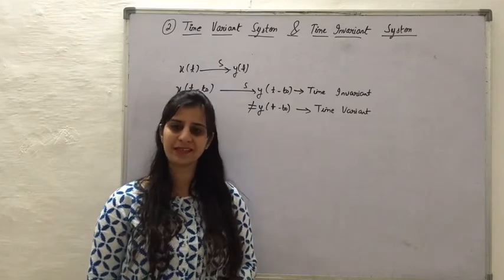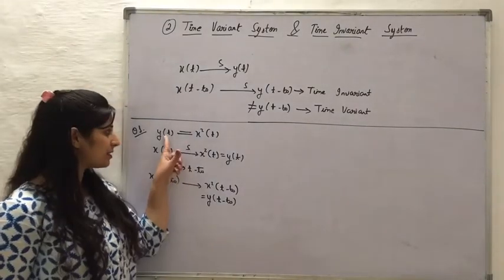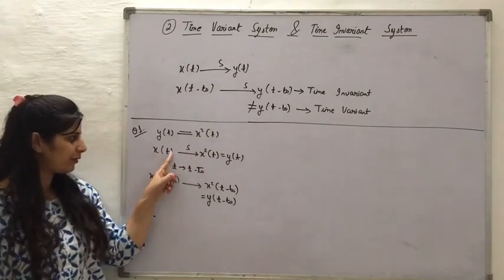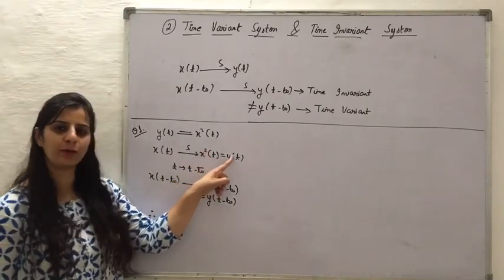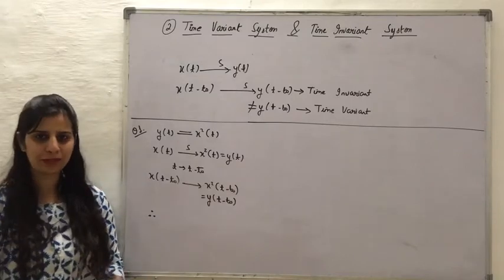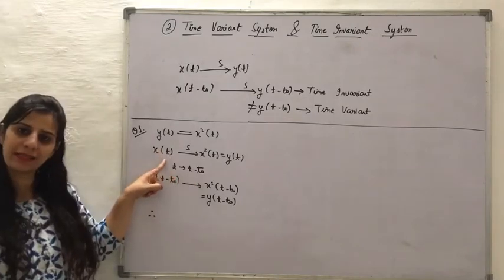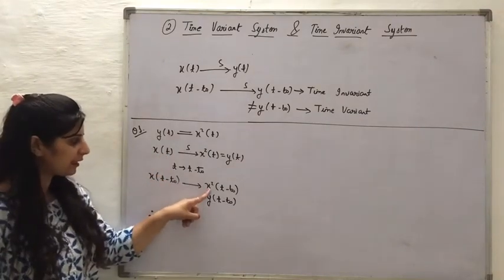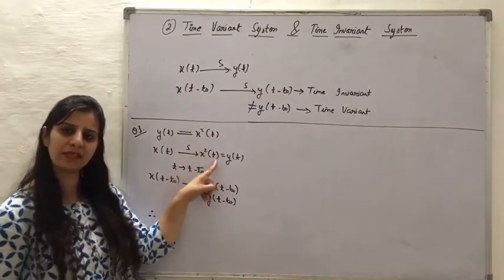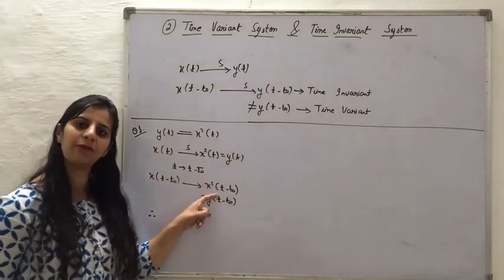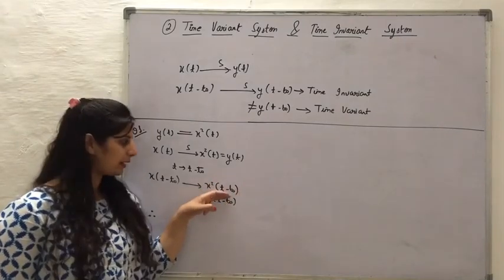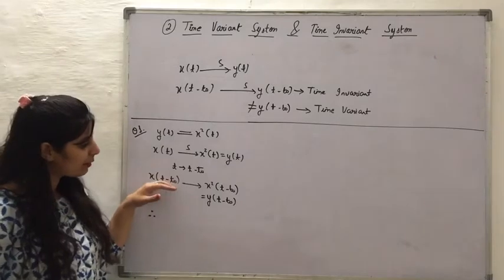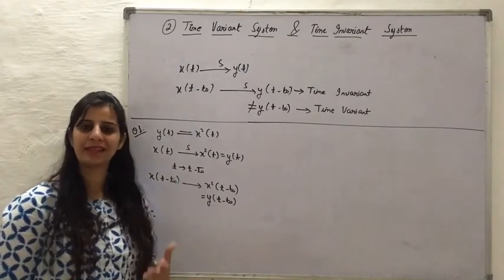Let us do some examples. The first example is a system producing output y(t) = x²(t). When x(t) passes through the system, it becomes x²(t) which equals y(t). Now, applying a delay by transforming t to t minus t0, we replace t with t minus t0, giving input x(t - t0). The output then becomes x²(t - t0), which equals y(t - t0). Since introducing delay in the input produces the same delay in the output, this system is a time invariant system.